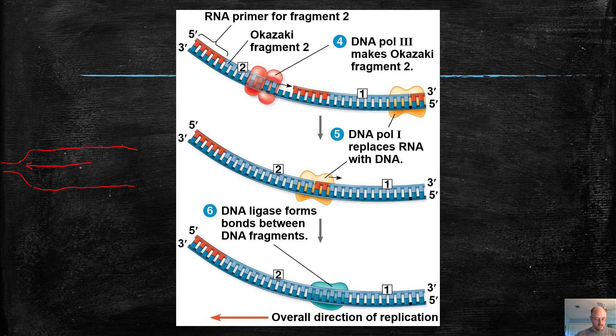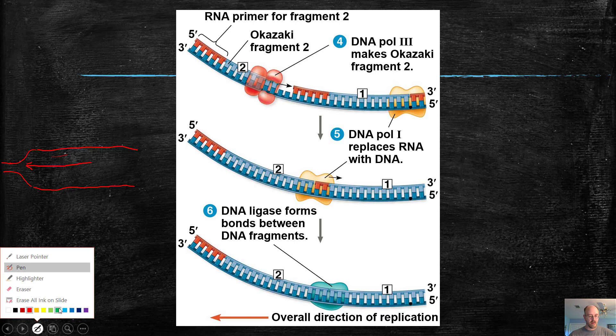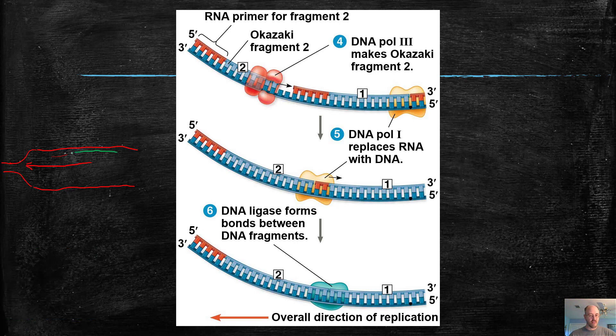And this piece up here that's being made is the leading strand. So it's being made in this direction. And it's just following that zipper pull. It's following helicase and all is well. But the lagging strand, because of the fact that DNA is anti-parallel, the piece down here is running in the opposite direction as the piece up here. So it's made in chunks in this direction.